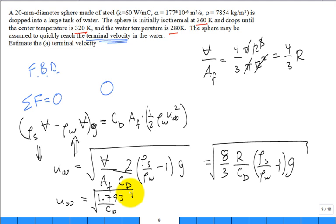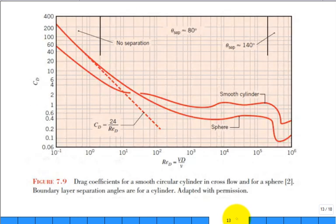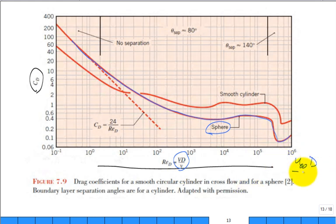Okay, and so then the volume divided by the area frontal, the volume is 4 thirds pi r cubed. The area is pi r squared, pi's go. And so it's 4 thirds r. And so this becomes 4 times 2, 8 thirds r divided by C sub D rho of the steel rho of the water minus 1 times G square root. I always double check my units, but I think that's correct. You give me a thumbs up if you like that equation. Is it okay? Got a couple thumbs up? Couple thumbs up, good. So now u infinity, what I can do is I can put all those constants together. It's 1.793 divided by C sub D square root. What do I do now? Because I don't know the drag coefficient. How am I going to get the drag coefficient?